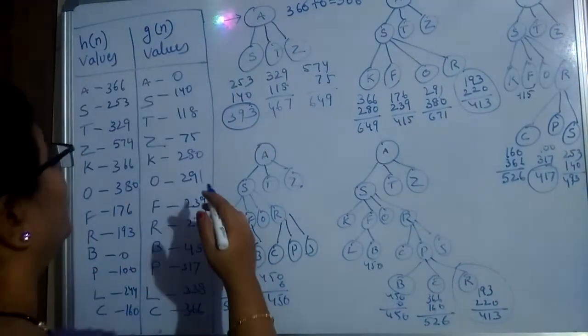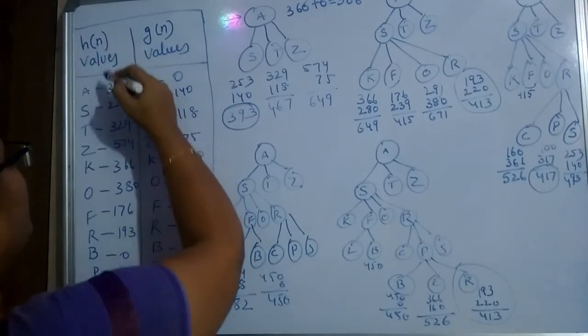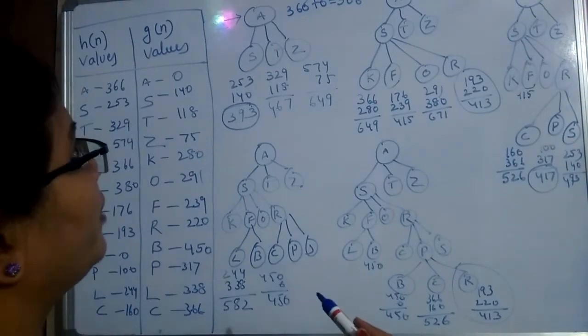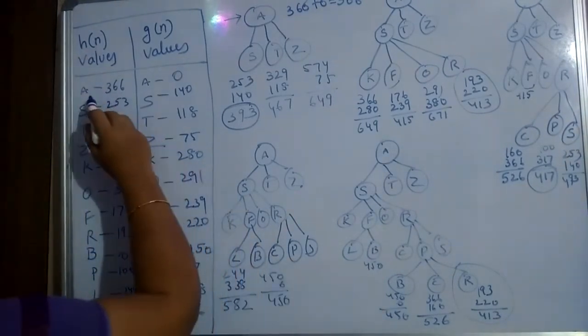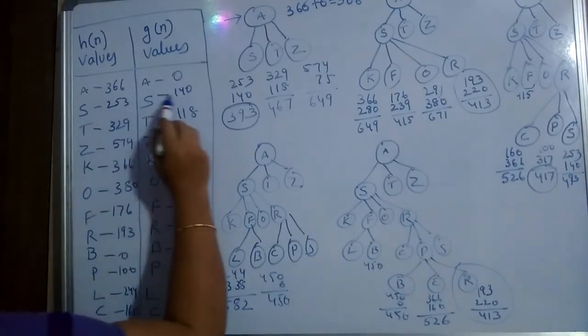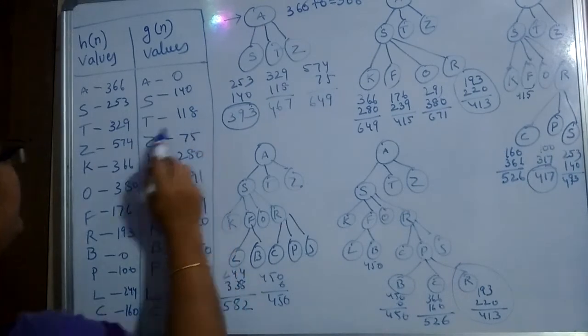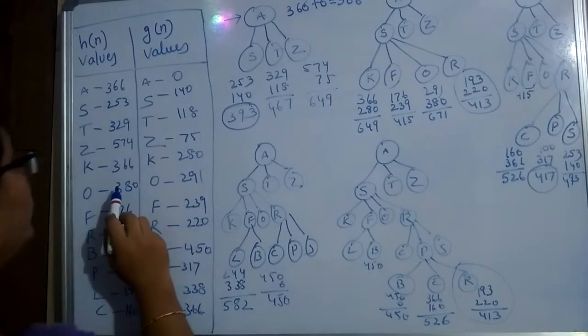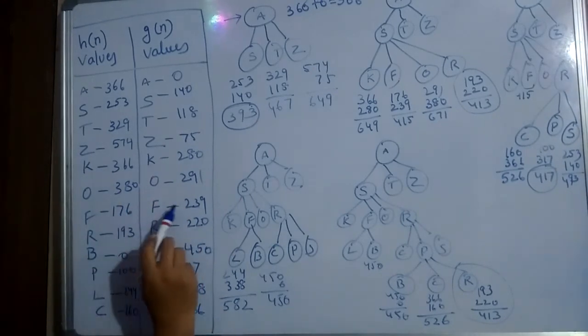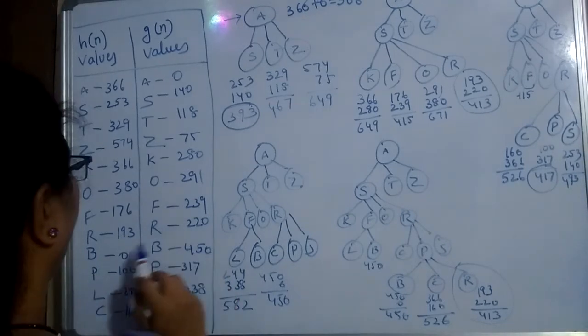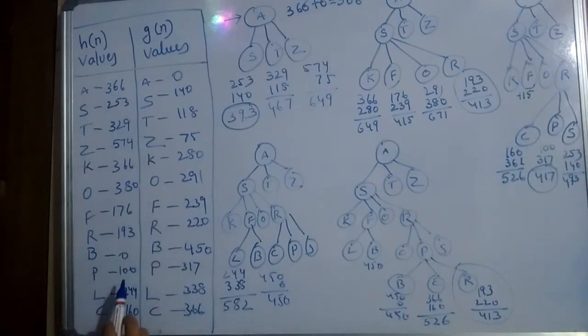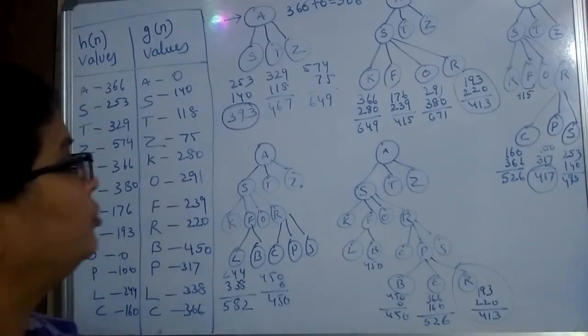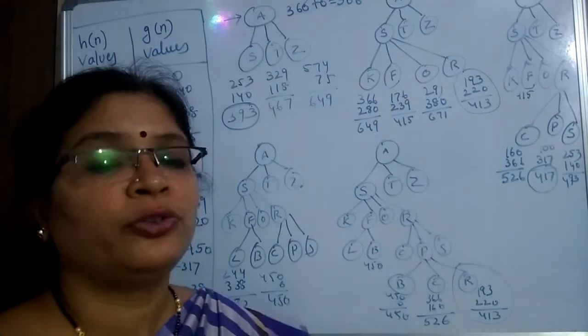Here look at this board. I have given the list of H of N values and G of N values. A is 366-0, S 253-140, T 329-118, Z 574-75, K 366-280, O 380-291, F 176-239, R 193-220, B 0-450, P 100-317, L 244-338, C 160-366. So these are the list of H of N and G of N values clearly given.